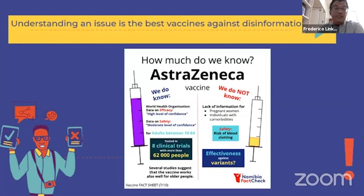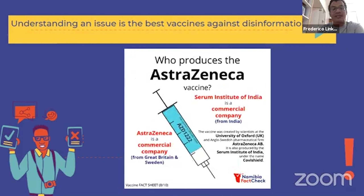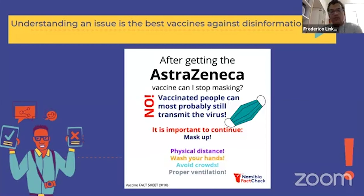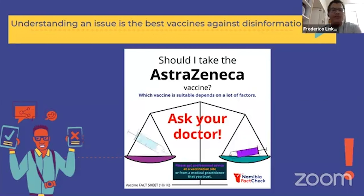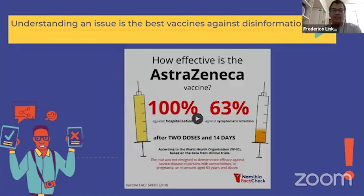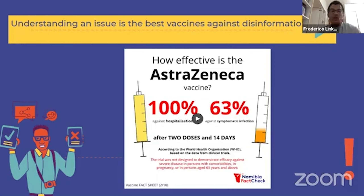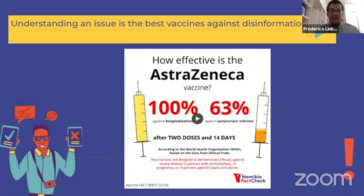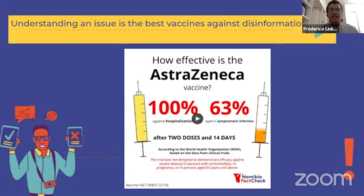Journalists definitely play a role. What we saw especially last year was event-based reporting where journalists only reported what the minister of health or health officials said at a briefing, while their audiences were encountering all sorts of vaccine-related falsehoods and disinformation in their social media feeds and on WhatsApp. Namibian media houses or journalists weren't addressing this flood of disinformation that their audiences were seeing online.